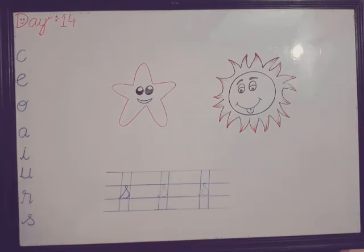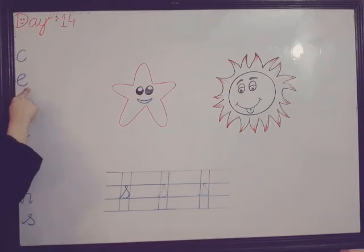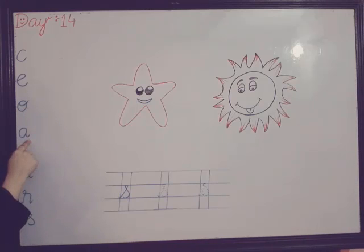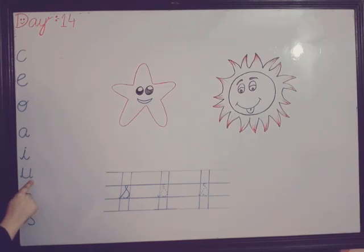Okay students, firstly we will drill the previous letter. Now drill with the student: the cat, the elephant, the orange, the apple, the ice cream, the umbrella, the rose.